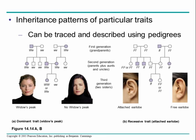Here we see a couple different pedigrees — one showing a widow's peak, which is actually a monogenic trait, and attached or unattached earlobes, which again is monogenic in humans. The circles mean females and the squares mean males, and typically the shaded-in box means they are affected, meaning they have the trait or disease being studied. Widow's peak is dominant, and attached earlobes is recessive, just depending on how you describe it.